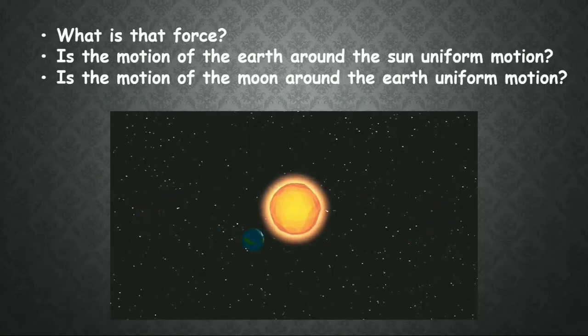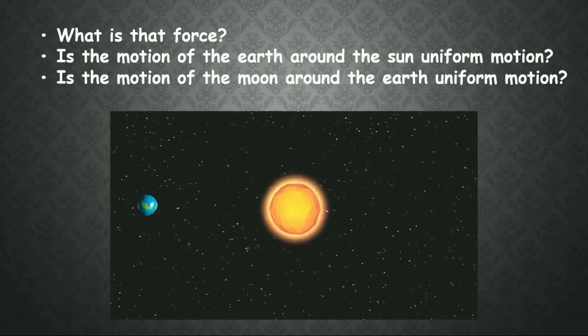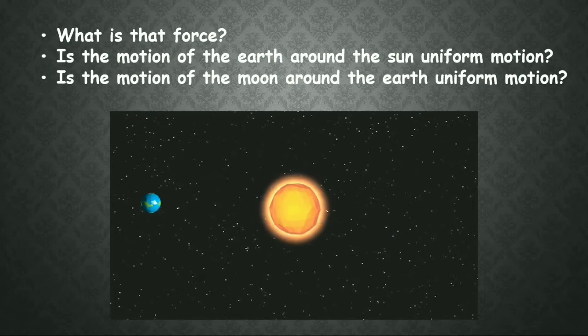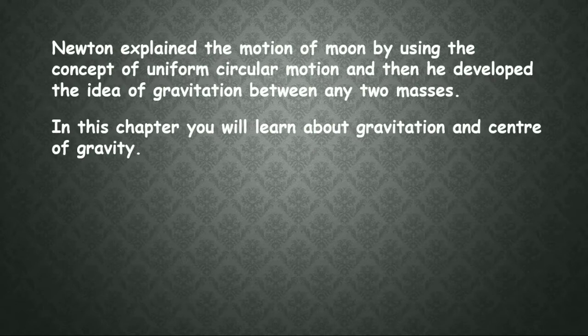So we have basic questions here. What is the force that is making the thing revolve around one object? Is the motion of earth around the sun uniform? Is the motion of the moon around the earth uniform? Newton explained the motion of the moon by using the concept of uniform circular motion, and then he developed the idea of gravitation between any two masses.